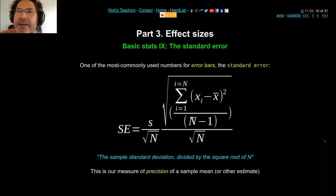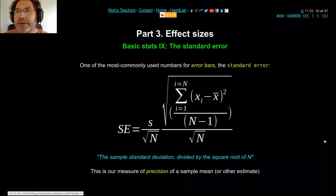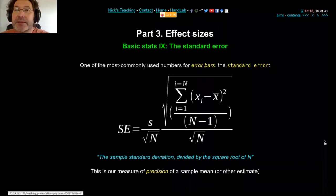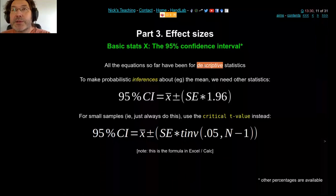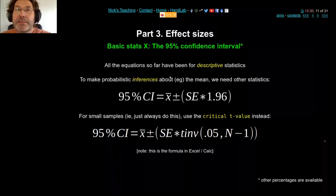The key formula to remember is that standard error equals standard deviation divided by the square root of N. All we're doing so far is describing the data — what's the mean, what's the variability, and what's the precision of the mean. These are all descriptive statistics. But you almost always want to make inferences — some sort of probabilistic claim about data.